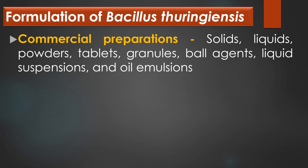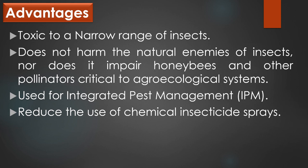Advantages of Bacillus thuringiensis: there are four major advantages. First, unlike most insecticides which target a broad spectrum of species including both pest and beneficial insects, Bacillus thuringiensis is toxic to a narrow range of insects only. Second, research suggests that Bacillus thuringiensis does not harm the natural enemies of insects nor does it impair honeybees and other pollinators, which are critical to agro-ecological systems. Third, Bacillus thuringiensis is used for integrated pest management by many organic farmers. Fourth, Bacillus thuringiensis reduces the use of chemical insecticide sprays which are extremely toxic and very expensive.